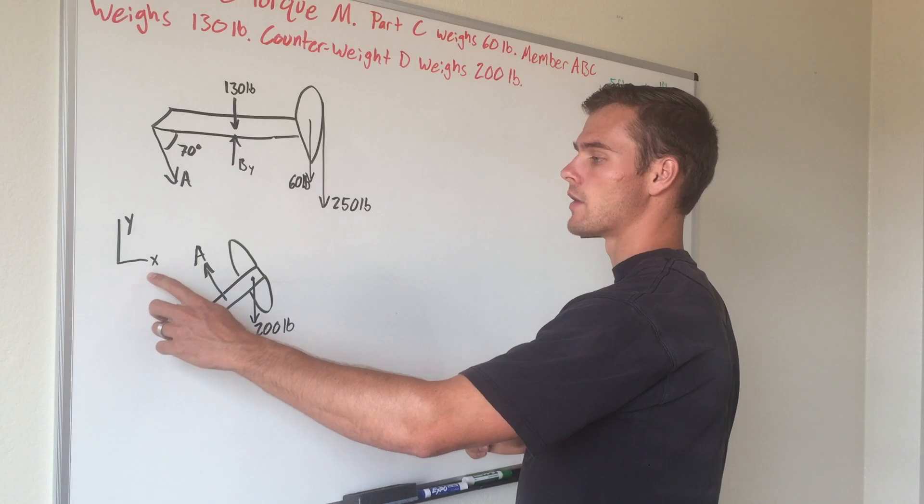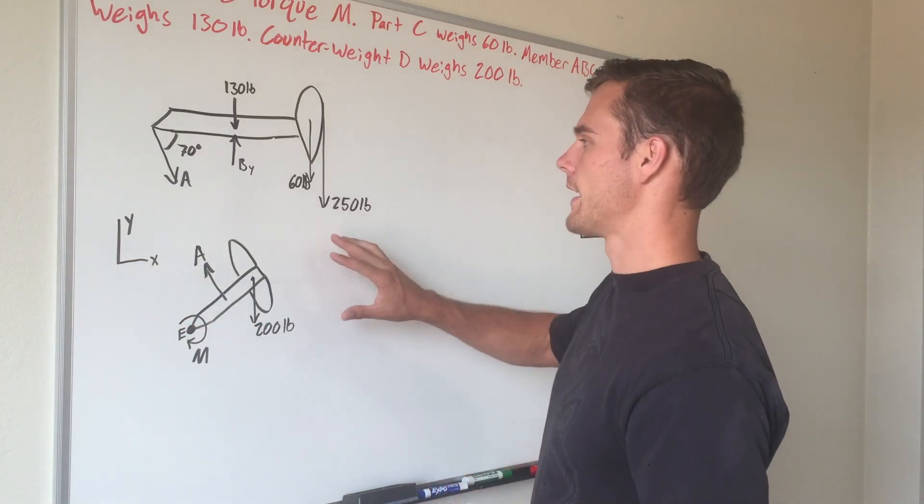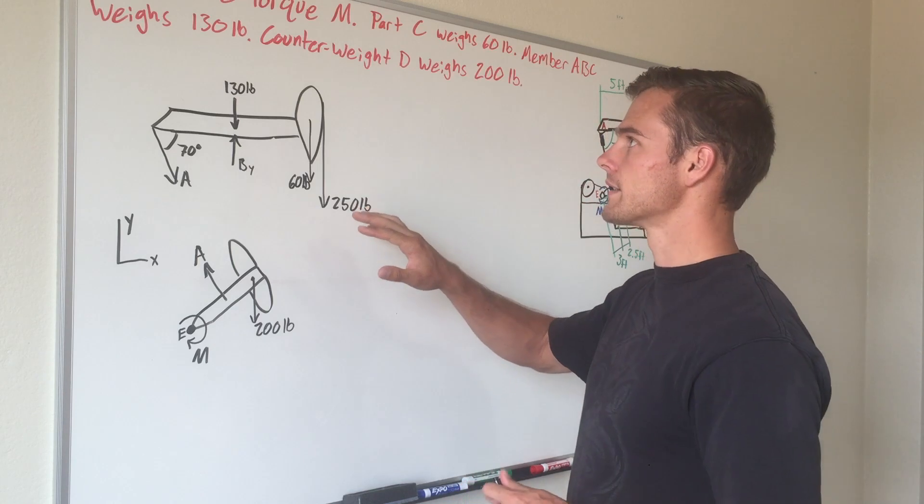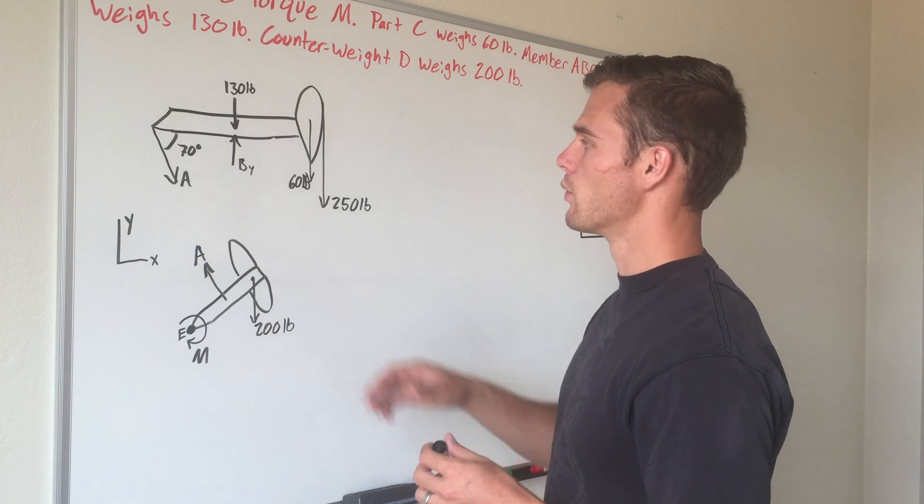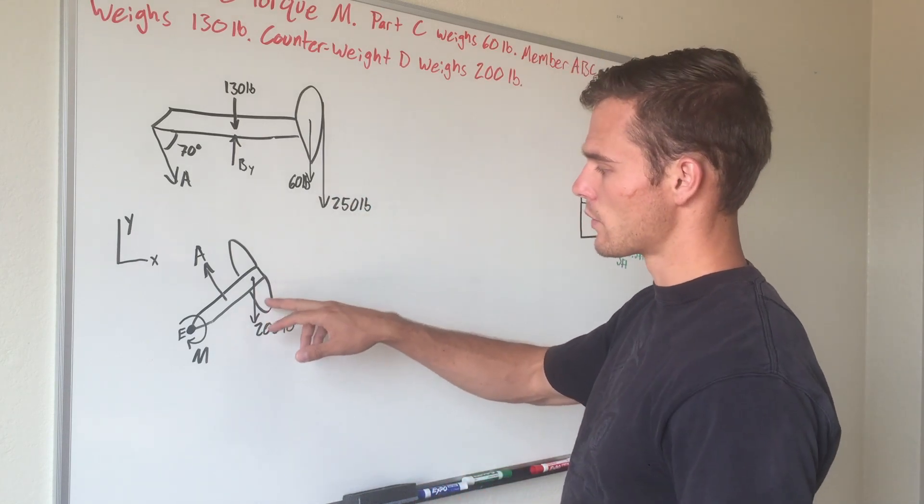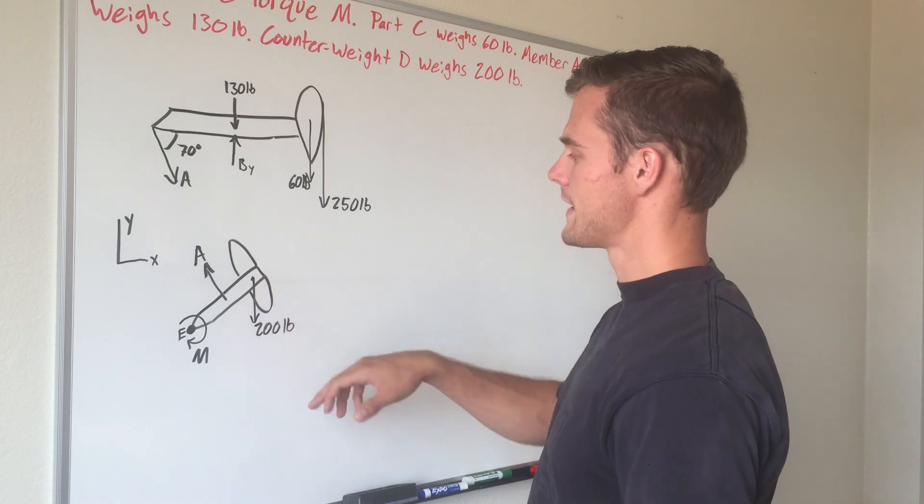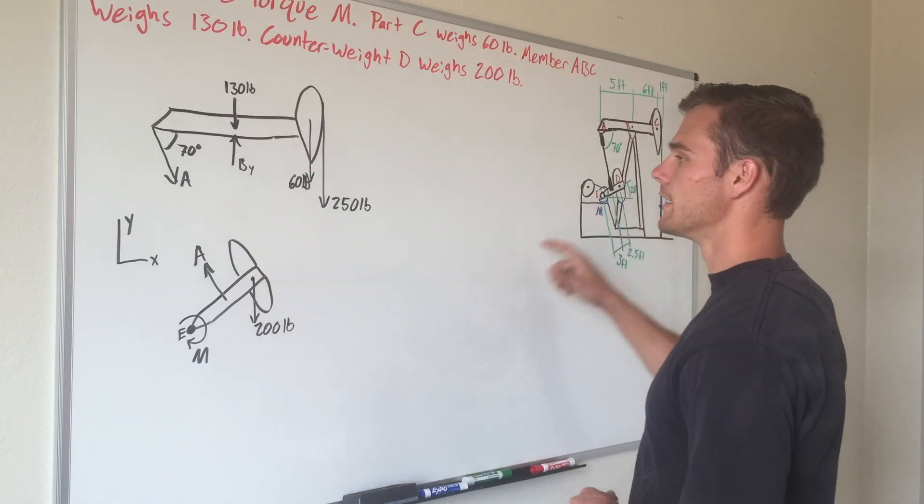We have our x and y directions labeled and we have drawn our free body diagrams with the weight of each member included. For our counterweight arm, we have 200 pounds and the center of gravity is at point D.